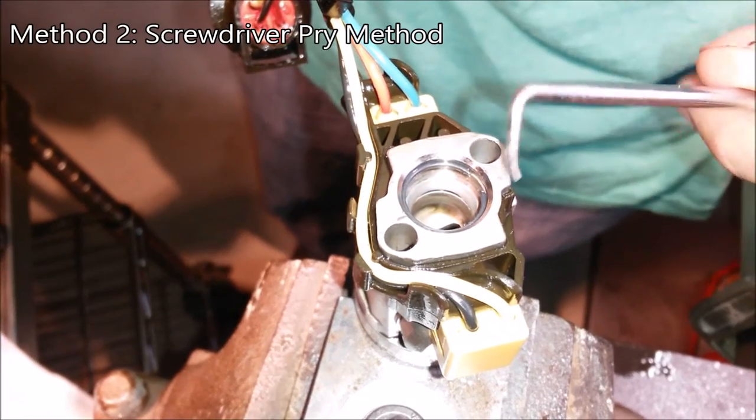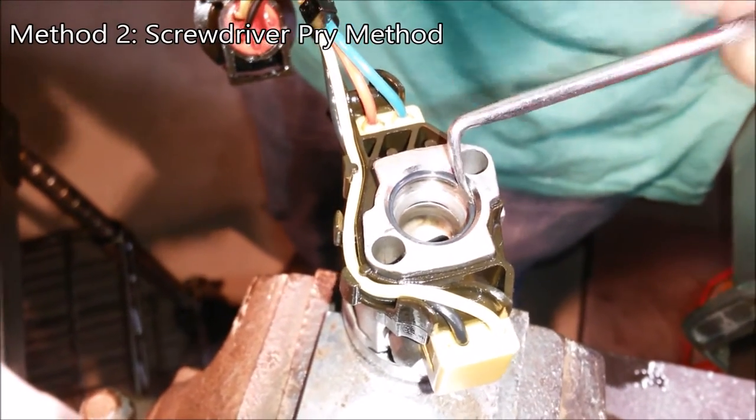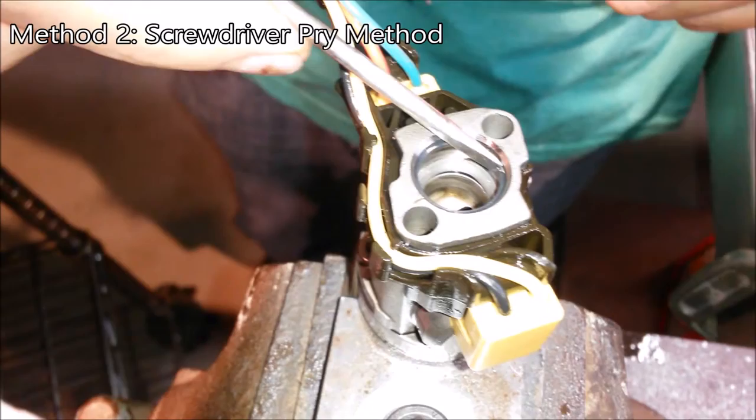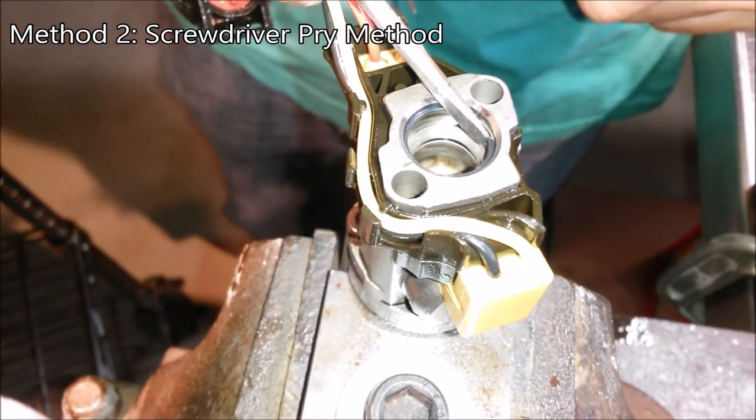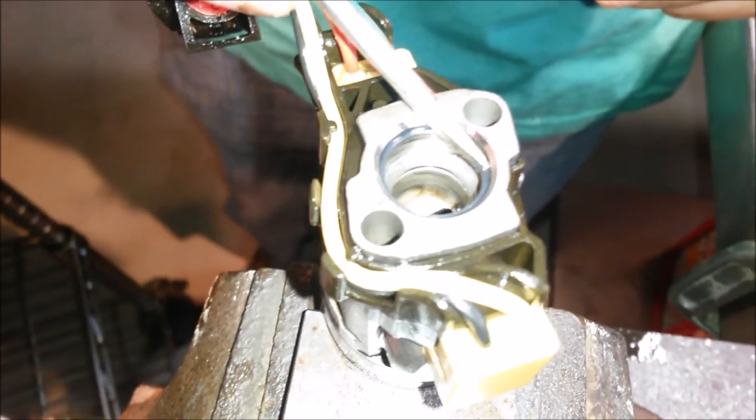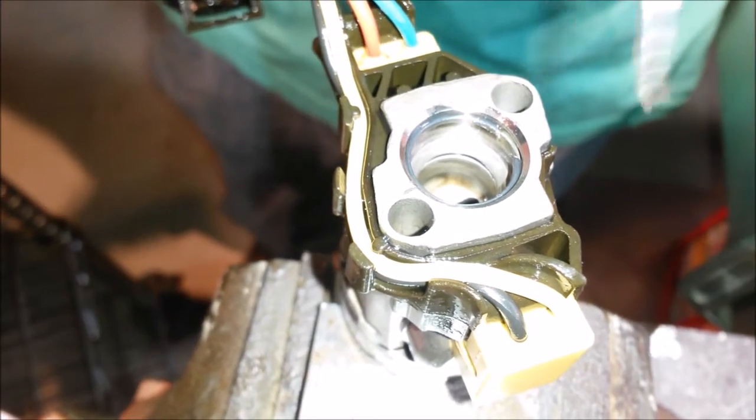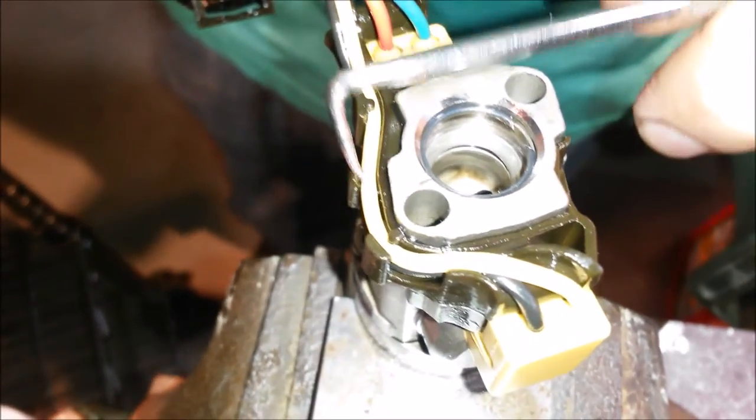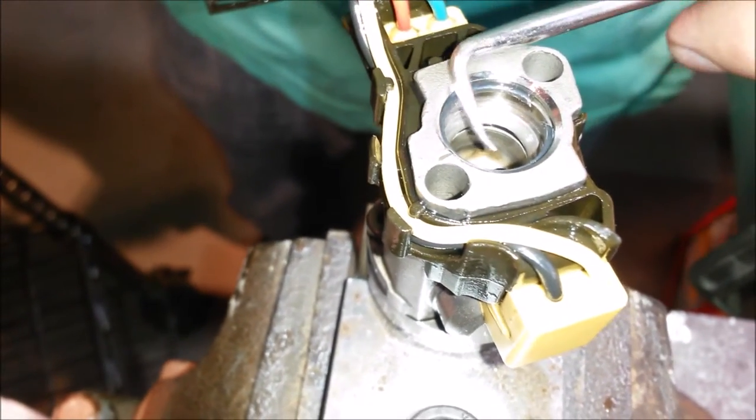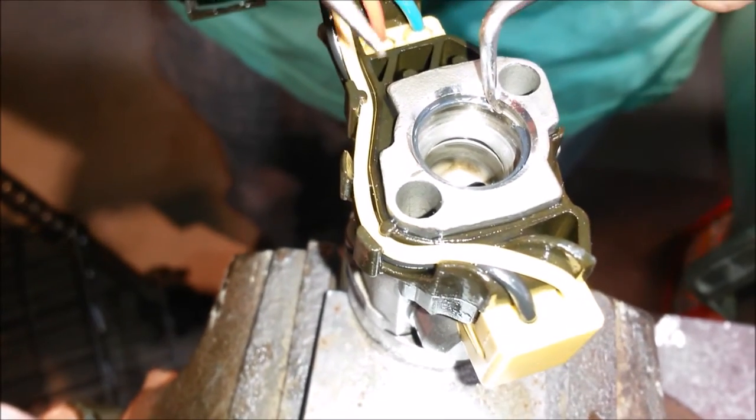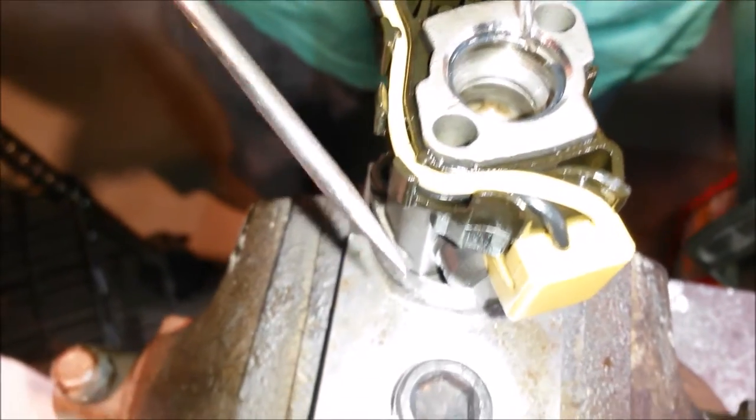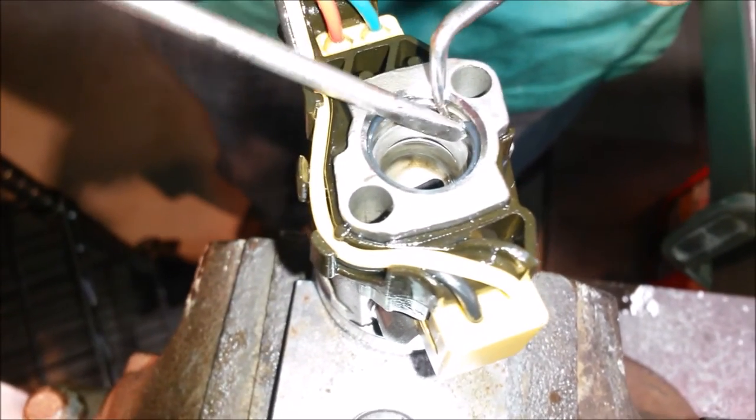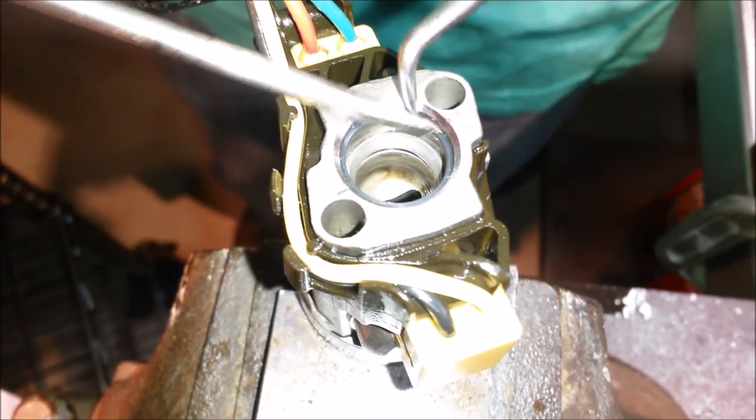Alright, this is going to be the screwdriver method of removing the C-clip. And you can only do this if you've got a nice sharp edge to grab onto on your clip. Certain manufacturers have better clips than others. And what you're going to use is a pick or another small screwdriver to hold the C-clip in place, and then you're going to use another small screwdriver to grab the edge of that clip and kind of catch it and pry it out.